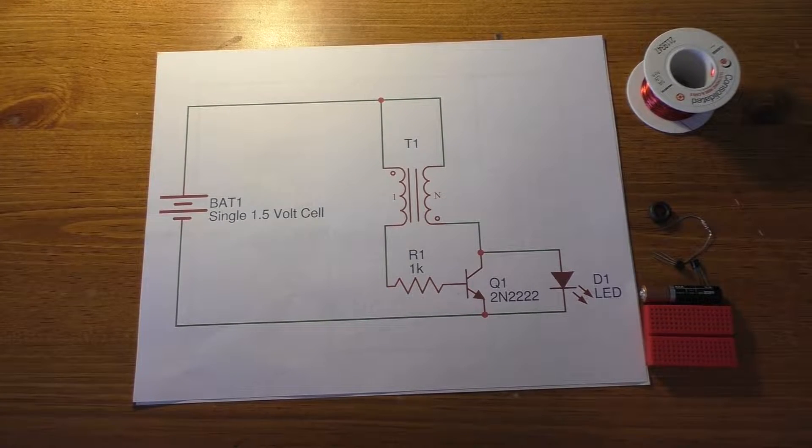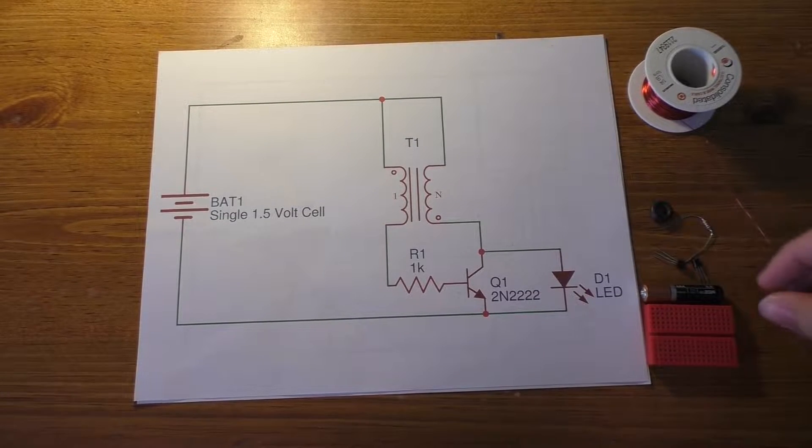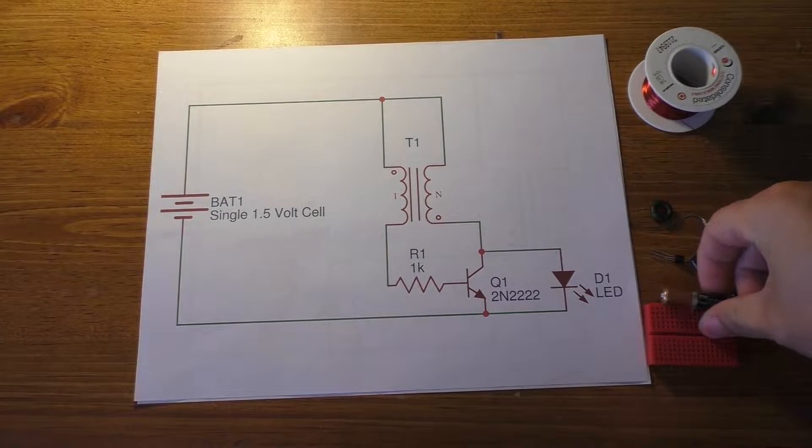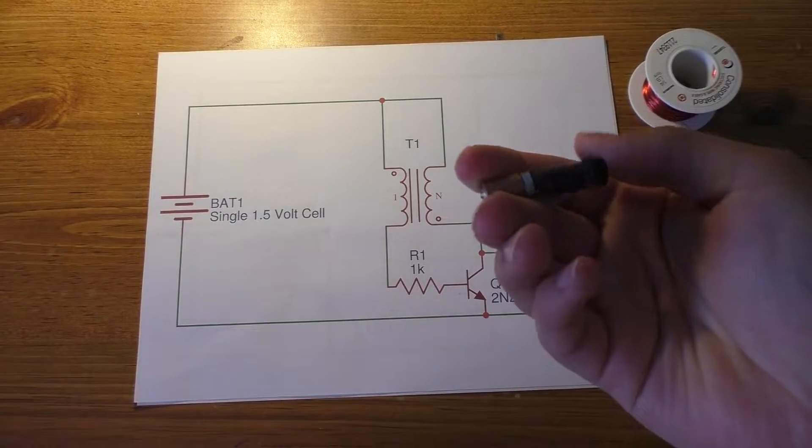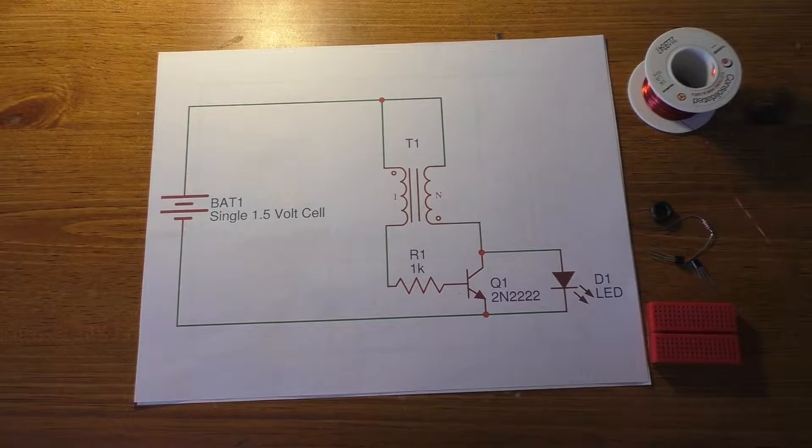Hey guys, today I'm going to be showing you how to build a Joule Thief. Now if you don't know what a Joule Thief is, it's pretty much just a circuit that takes the voltage of a 1.5 volt battery, single cell like this, and it boosts up enough to light up an LED.